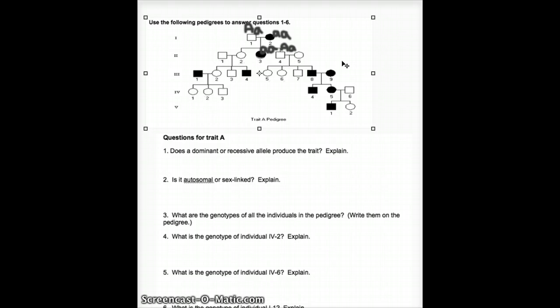Individual 4-6, which is over here, married into the family. We don't know anything about individual 4-6's parents. However, individual 4-6 had children. He had children with this woman right here. One of his children has the trait in question and one does not. And because one of his children has the trait in question, we know that he has to be heterozygous as well. This child has two recessive alleles. She gets one from the mom and one from the dad. So, we know that he has to have at least one.